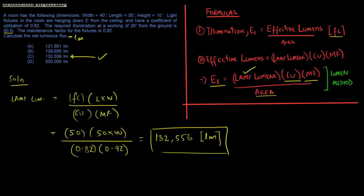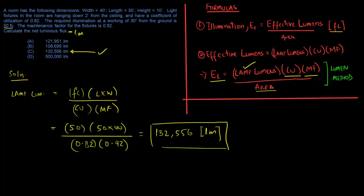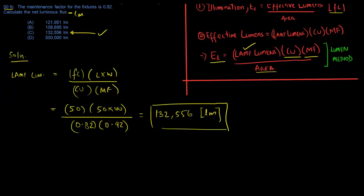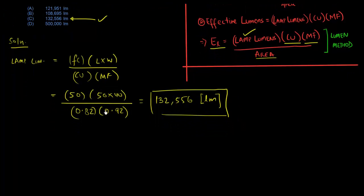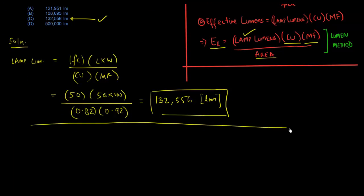As you can see, it's a relatively straightforward problem in terms of the math involved. Since we have time before the sample problem, let's look at a little more of the theory — the Lumen method terminologies: lamp lumens, coefficient of utilization, maintenance factor, and the area.